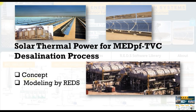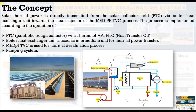We are going to discover the main concept of how we can run our model. The main concept of such configuration is that Solar Thermal Power is directly transmitted from a Solar Collector Field — a Parabolic Trough Collector, considered here as a parabolic trough or dual trough system — via an intermediate unit which is a boiler heat exchanger unit, in order to convert this thermal power to steam.